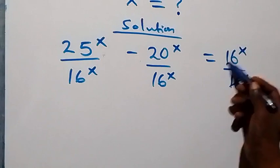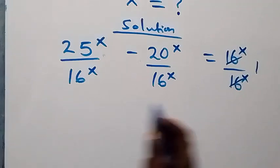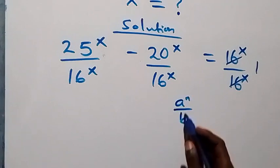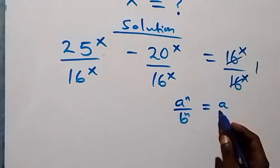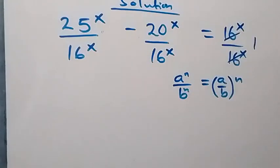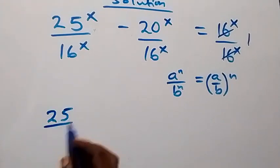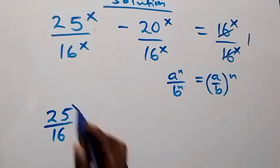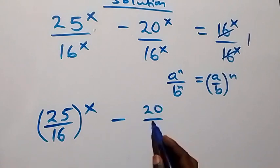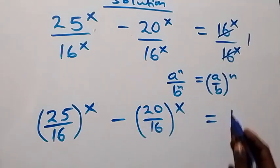The 16^x terms cancel on the right-hand side, giving us 1. Then, from the law of indices, a raised to power n over b raised to power n is the same as (a over b) raised to power n. So we have (25/16) raised to power x minus (20/16) raised to power x equals 1.